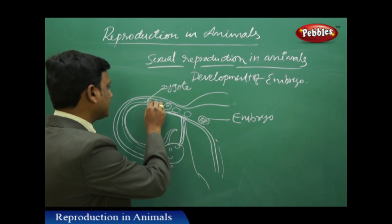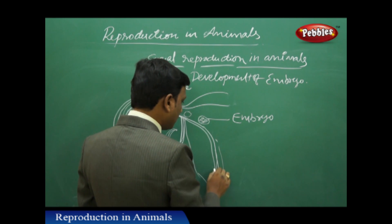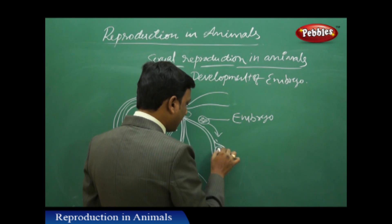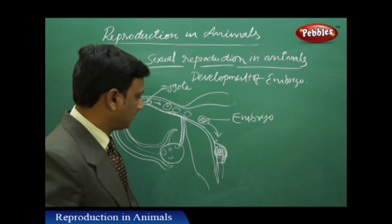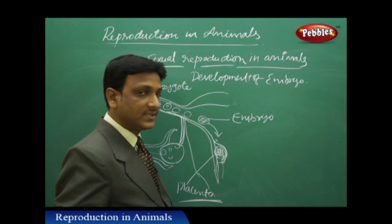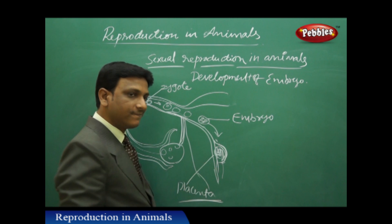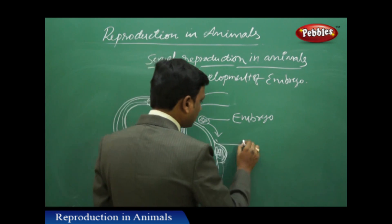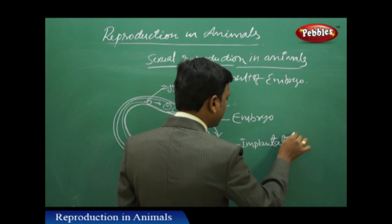The zygote is only one cell. That cell divides further and finally becomes an embryo. The embryo then comes to the uterus and gets fixed there. It attaches to the wall of the uterus by a special tissue called the placenta, which provides support and nutrition to the embryo. We call this process implantation.